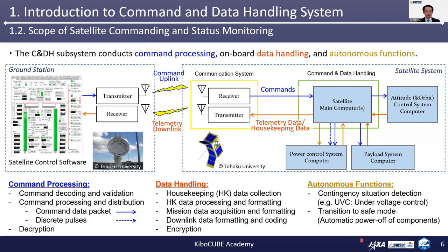The third one is the autonomous functions, illustrated by dark yellow in this diagram. The C&DH system is responsible for conducting autonomous functions for the survival of the satellite system. These include, for example, contingency situation detection, such as under-voltage control, or UVC of the satellite. UVC events occur when the battery state of charge becomes too low. In this situation, the C&DH system shall trigger a transition to safe mode and make decisions about which components to turn off in order to recover the power balance, thus recharging the batteries. This power balance can also be implemented inside the power control system.